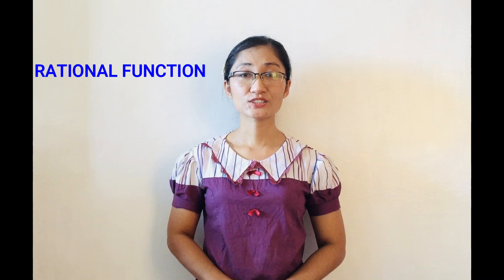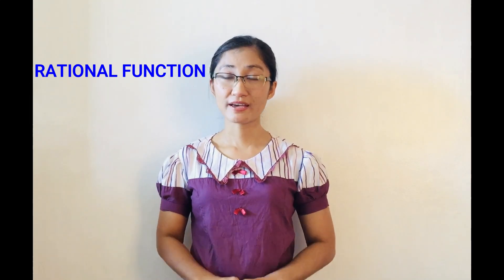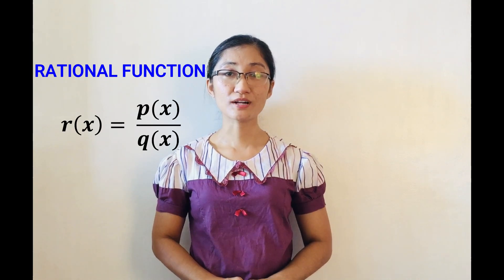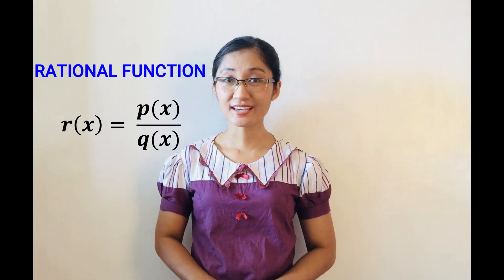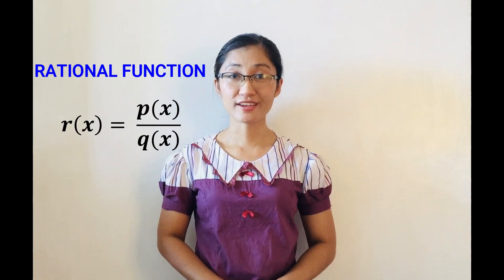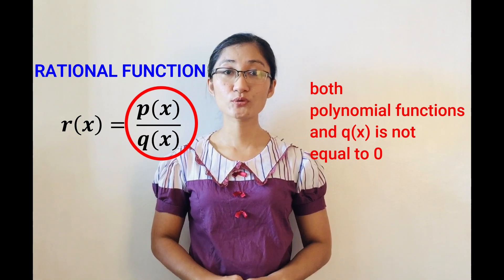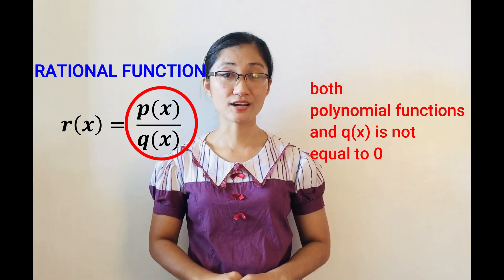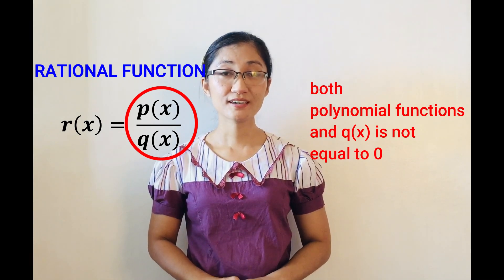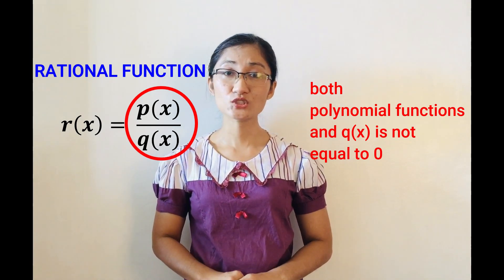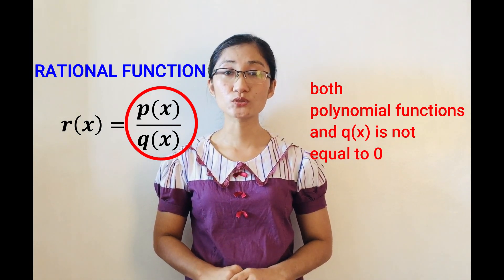So a rational function may be defined as a function in the form r(x) = p(x) over q(x), where p(x) and q(x) are both polynomial functions and q(x) should not be equal to 0.